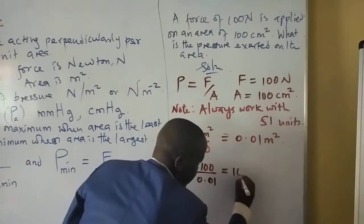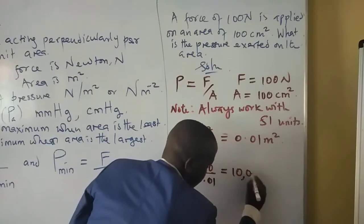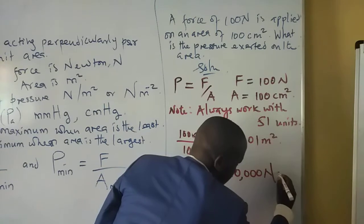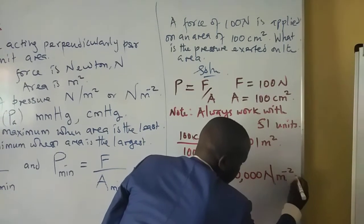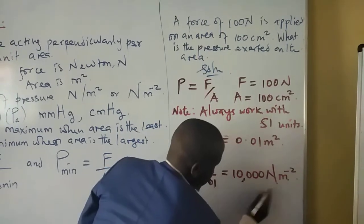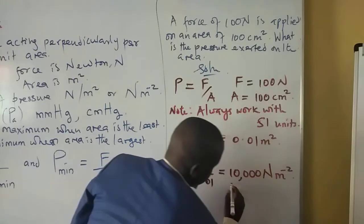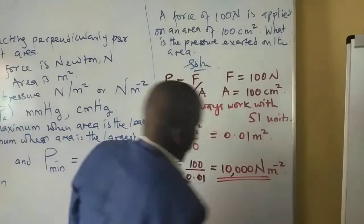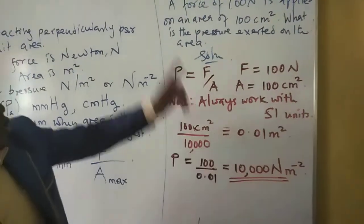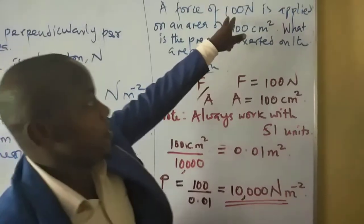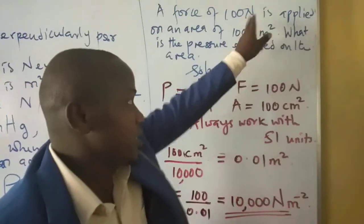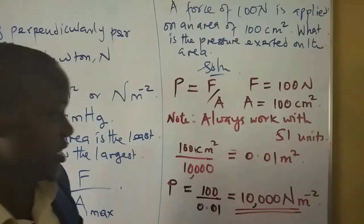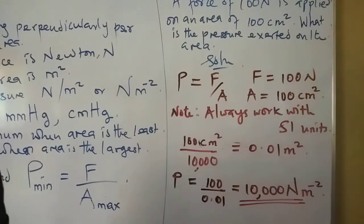This gives us 10,000 Newtons per meter squared. That is the pressure caused by a force of 100 Newtons on an area of 100 square centimeters.